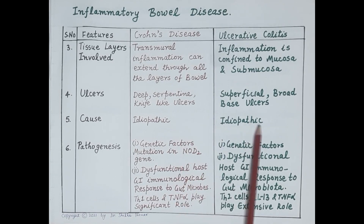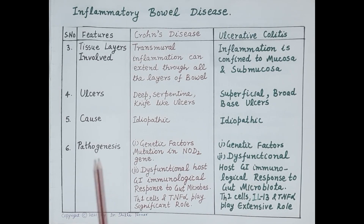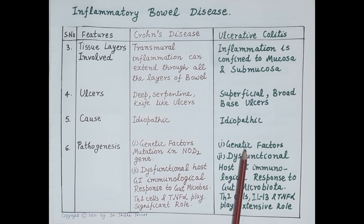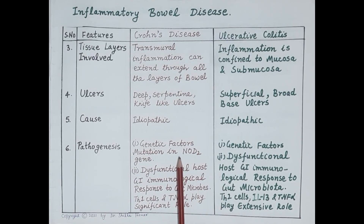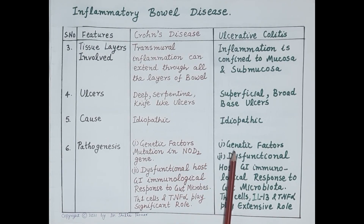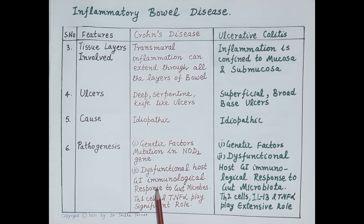The causes: in both diseases, the cause is idiopathic — the exact cause of neither Crohn's disease nor ulcerative colitis is known. Regarding pathogenesis, genetic factors play a major role in both diseases, and first-degree relatives are at higher risk. A mutation in the NOD2 gene (nucleotide oligomerization binding domain 2 gene) is associated with Crohn's disease, but no such link exists between NOD2 and ulcerative colitis.